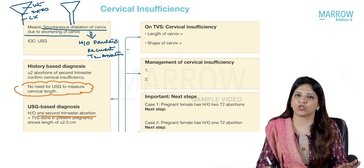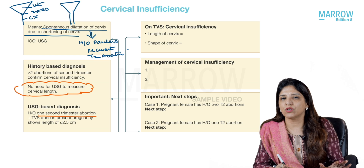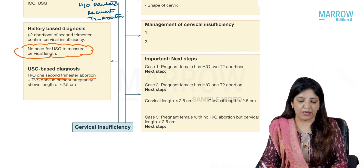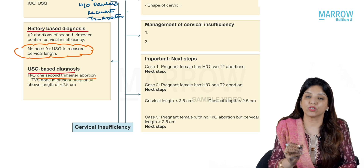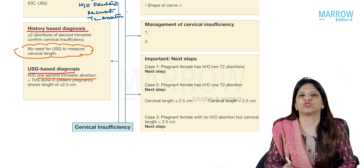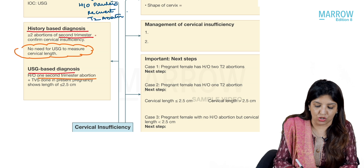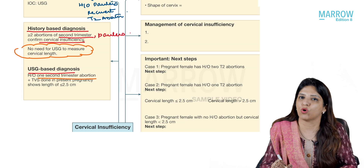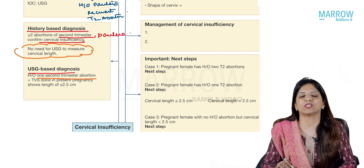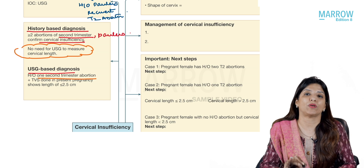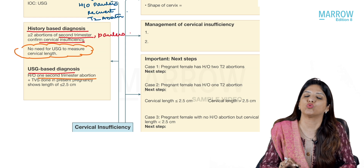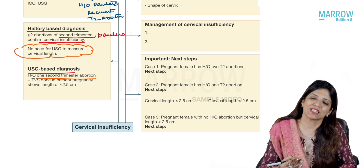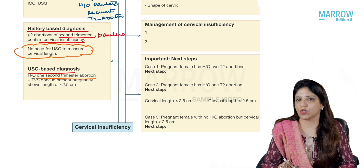A diagnosis of cervical incompetence can be made either based on history or based on ultrasound. If a patient gives history of two or more second trimester painless abortions, that confirms cervical insufficiency. In that history-based diagnosis, no further investigations are needed to confirm it.